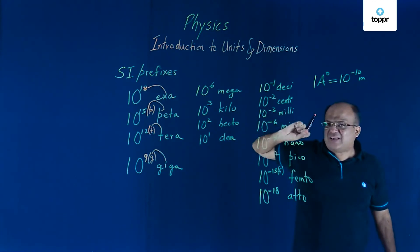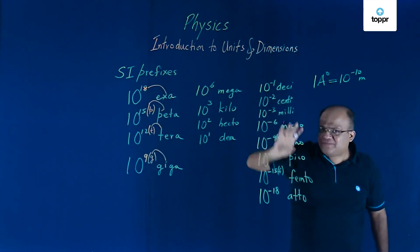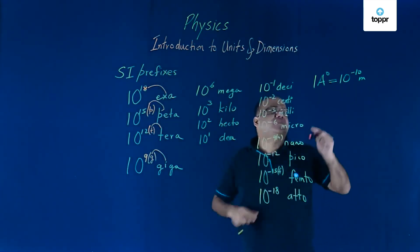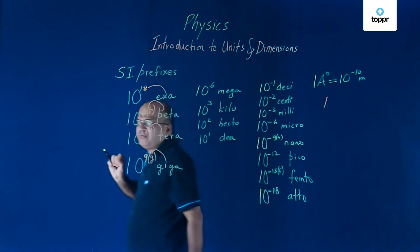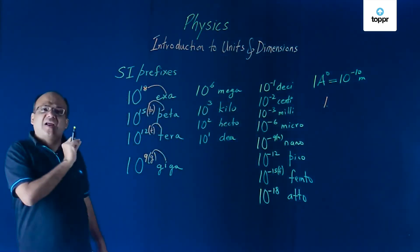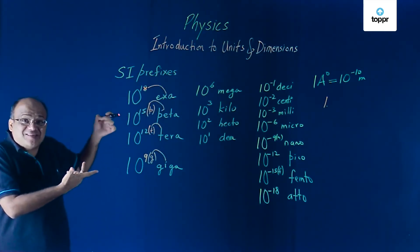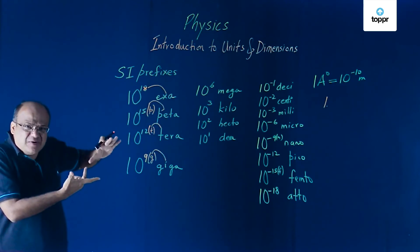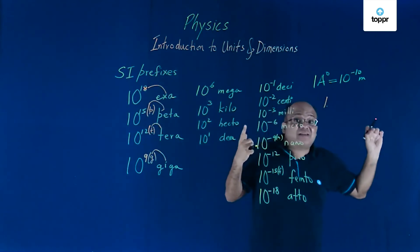As we learn SI, we must learn certain rules. There are four rules in SI. First one, full name of units named after a person are not written such that the first alphabet is a capital letter. Full name of units, named after a person, do not start with a capital letter.